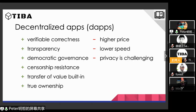Decentralized applications have verifiable correctness — everyone knows and can check the rules, meaning transparency. They can have democratic governance where rules about how users control the system are strictly enforced. They are resistant to censorship, have transfer of value built in, and provide true ownership. There are also some drawbacks: because it runs on a distributed network of nodes, the price can be higher — for Ethereum transactions today you need to pay a certain amount. There are also scalability and performance issues still being researched. And because blockchain is public and transparent, maintaining user privacy is not impossible but it's challenging.